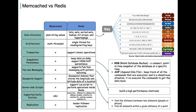If your application requires complex data manipulations or features beyond caching, Redis might be a better choice. If you need a simple caching solution with a focus on performance and don't require complex data structures, Memcached might be a good fit. If your application requires advanced data structures, persistence, and additional features beyond caching, Redis is a more versatile choice.